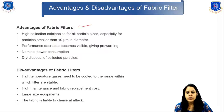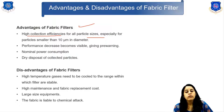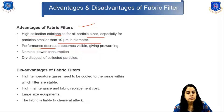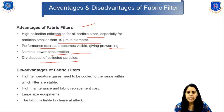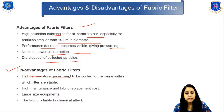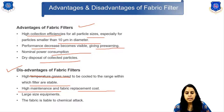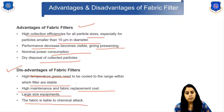Advantages of the fabric filter include high collection efficiency for all particle sizes, especially smaller than 10 micrometers in diameter, visible performance decrease giving pre-warning, nominal power consumption, and dry disposal of collected particles. Disadvantages include the need to cool higher temperature gases to the operating range of the filter, high maintenance and fabric replacement costs, large equipment size, and susceptibility of the fabric to chemical attack.